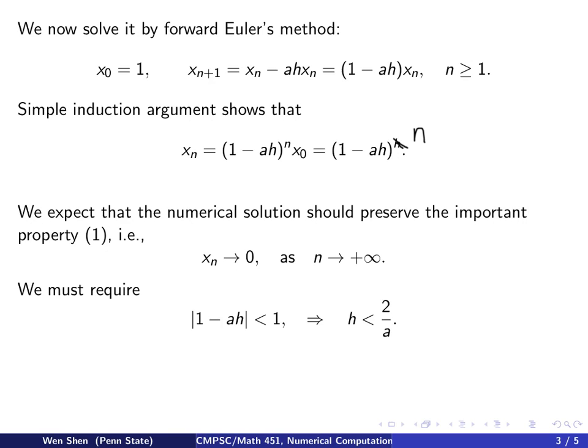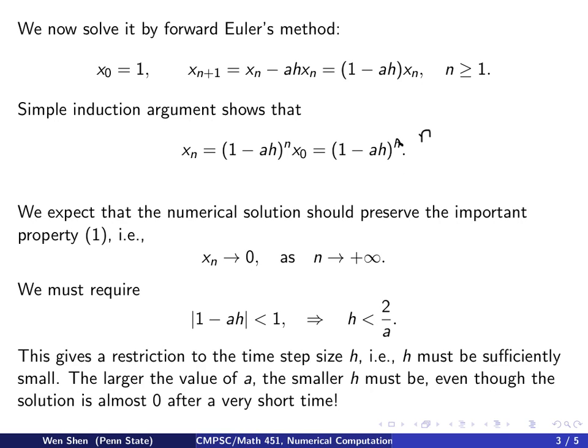For this to be satisfied, we require |1 - ah| < 1. Solving this inequality gives a constraint on h: h < 2/a. This gives us a restriction on the time step size h. h must be sufficiently small with respect to a.